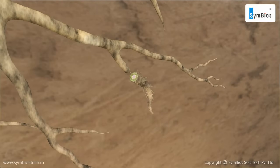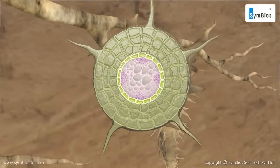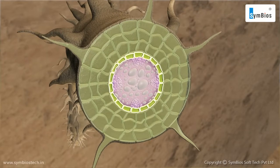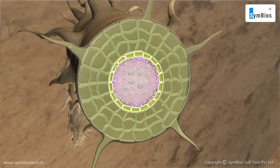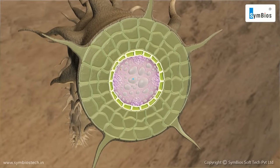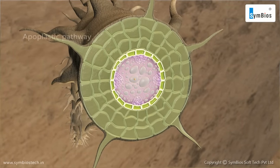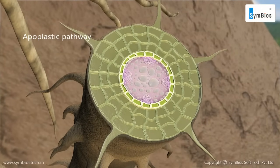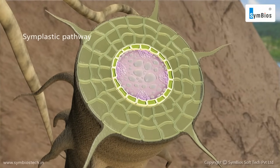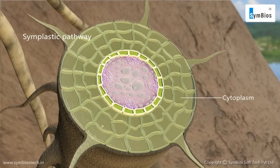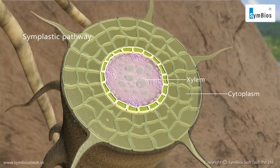Water and minerals enter the root by two pathways: apoplastic pathway and symplastic pathway. If water and minerals move from cell to cell through spaces between the cell walls, then it is known as the apoplastic pathway. In the symplastic pathway, the water and minerals move across the cytoplasm and finally reach the xylem.